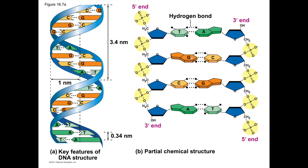Those nitrogen-containing bases also come in two categories. You can have bases made out of two fused chemical rings — like A and G — which are called purines. Or you can have bases made out of one chemical ring — like C and T — which are called pyrimidines.